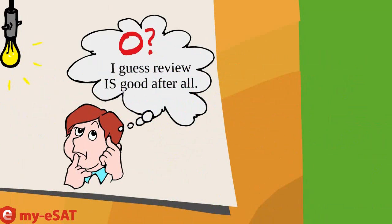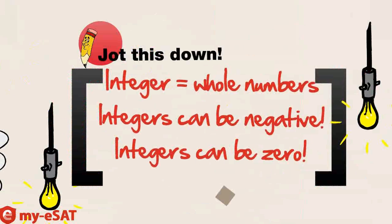This is where knowing the exact definition of an integer comes in handy. An integer is just a fancy name for any whole number. So is negative 1 a whole number? Yes, whole numbers can be negative. Is 0? Yes, 0 is a whole number too. Integers can be negative or zero as long as they are a whole number. Write that down.